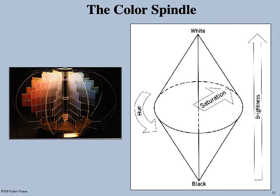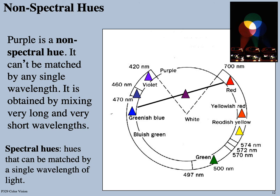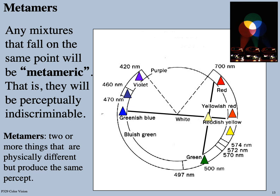Color is three-dimensional — you need three dimensions to adequately describe a color. Purple, for instance, is a non-spectral hue: there's no single wavelength that corresponds to it. It's just a short wavelength like blue and a long wavelength like red that our eyes and brain instantly combine into the color percept of purple, even though there's no actual wavelength associated with it.